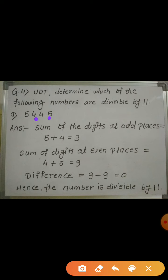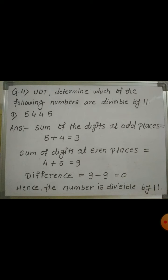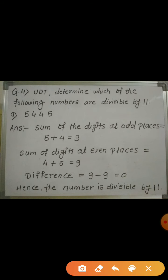If we add the digits at odd places, we get the sum 9. Similarly, the digits at even places are 4 and 5, at the second and fourth positions. If we add them, we get the sum 9. Now taking the difference of both sums: 9 minus 9 equals 0.